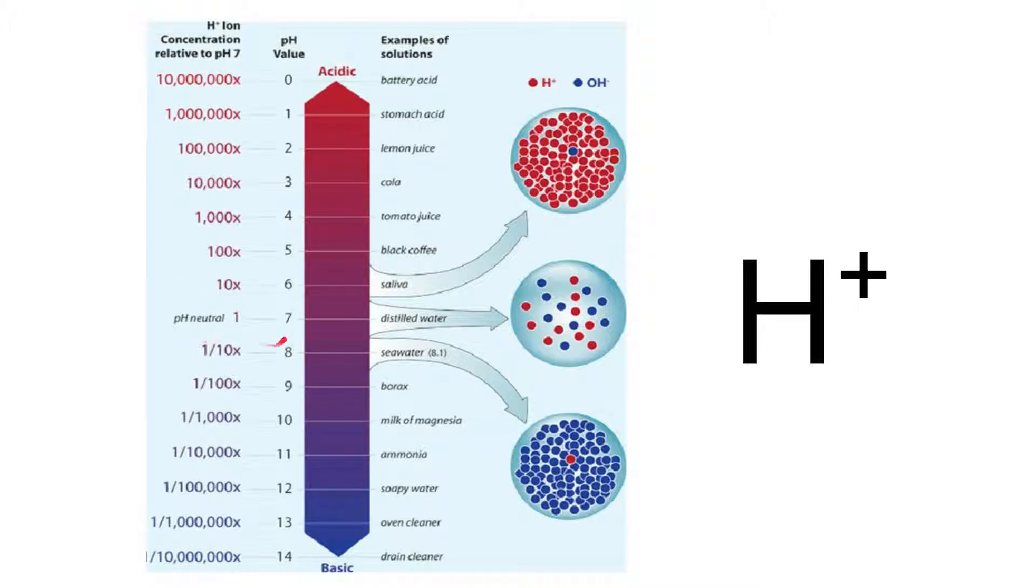Hydrogen ions are important in controlling pH. Now you can see on this chart here, where you have a pH of 7, the pH 7 is given a relative hydrogen ion concentration of 1. As you reduce the pH, you increase the hydrogen ion concentration. And as you increase the pH, you decrease the hydrogen ion concentration.